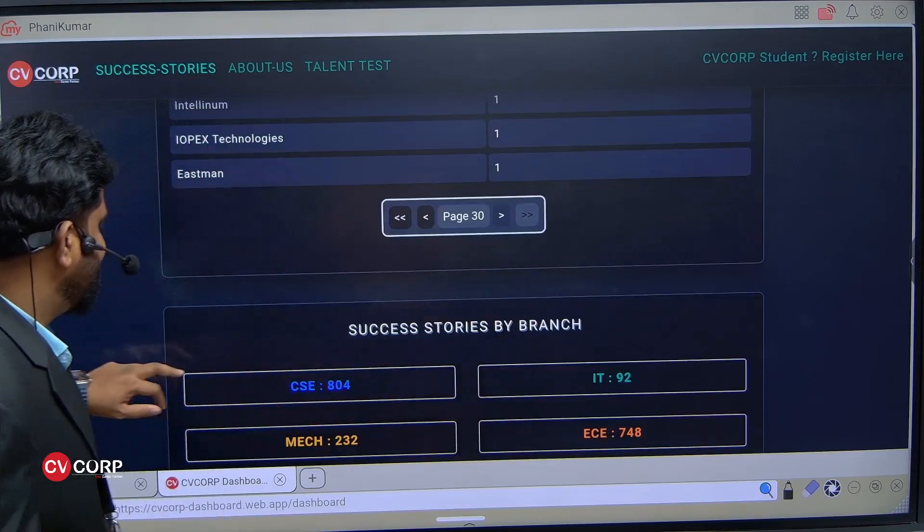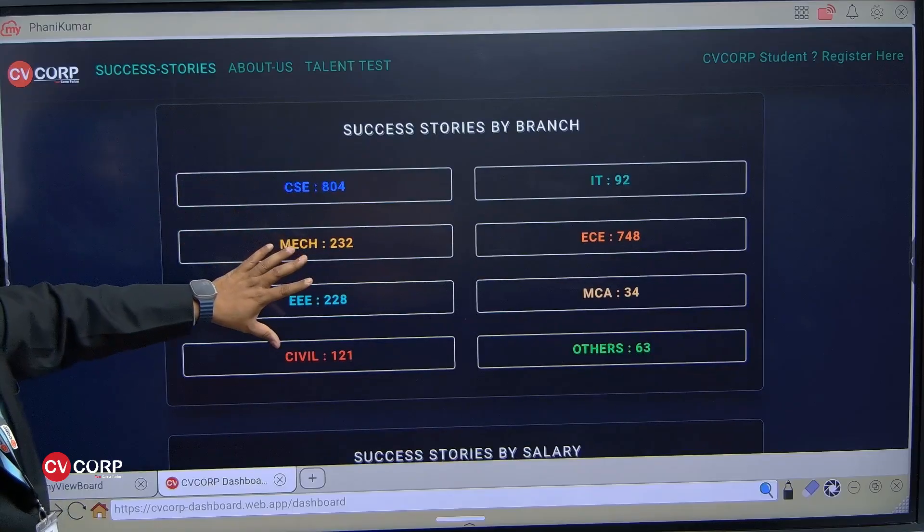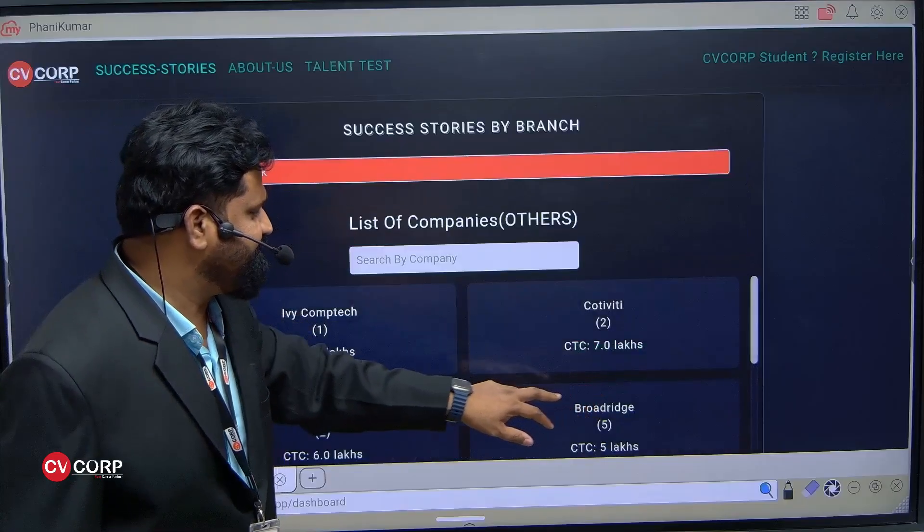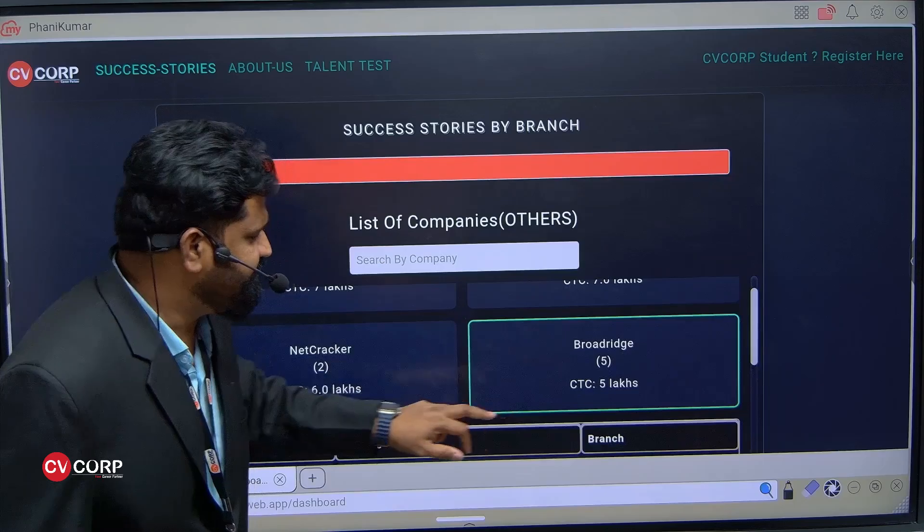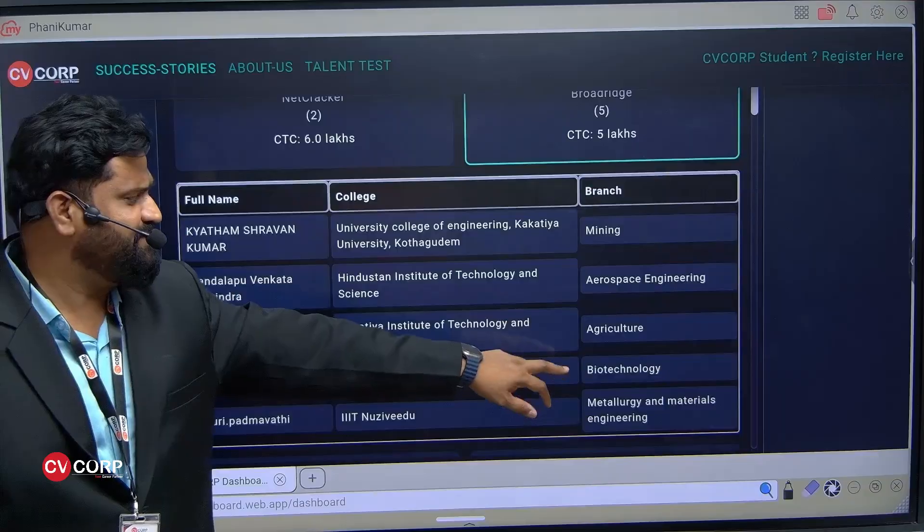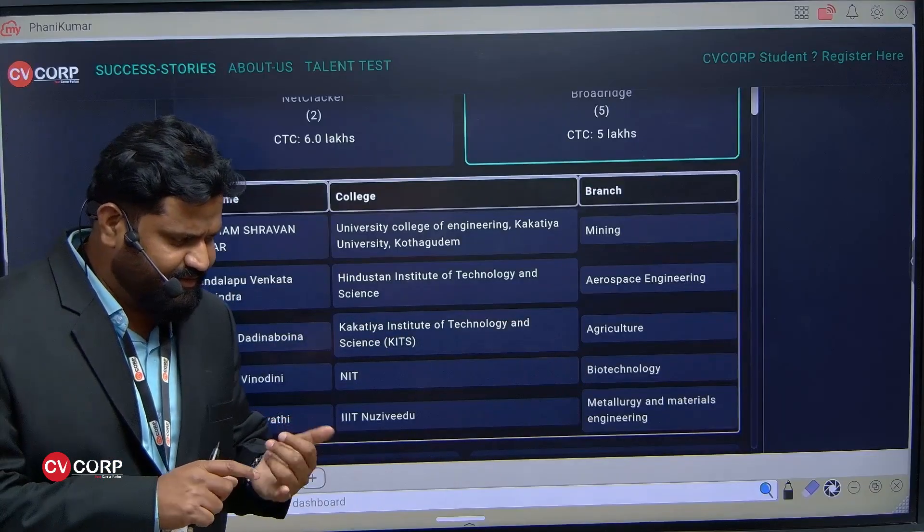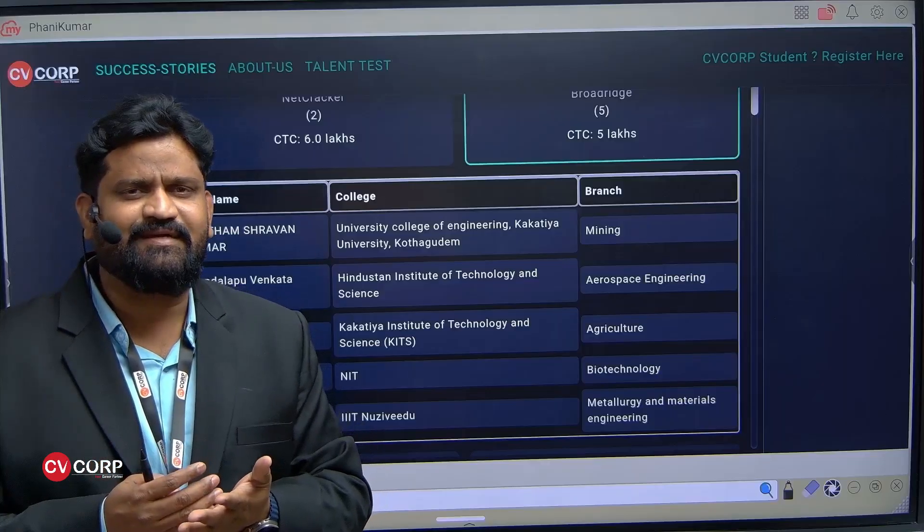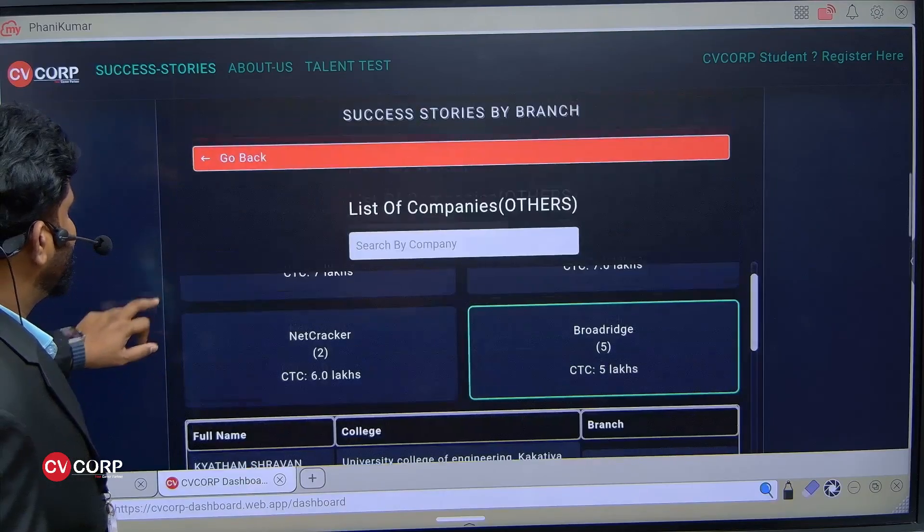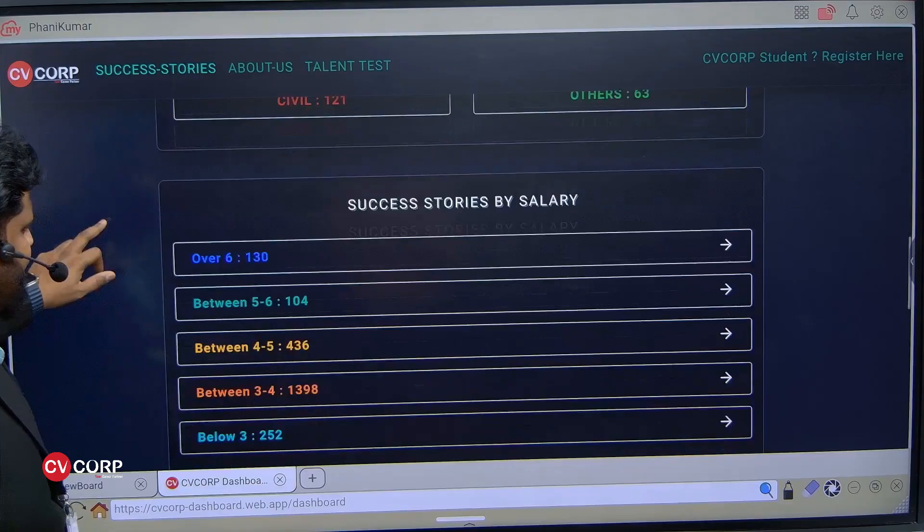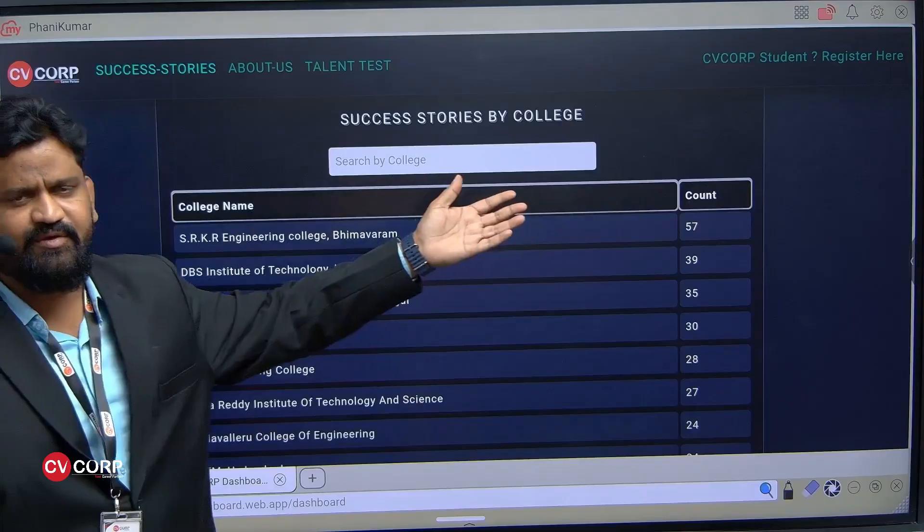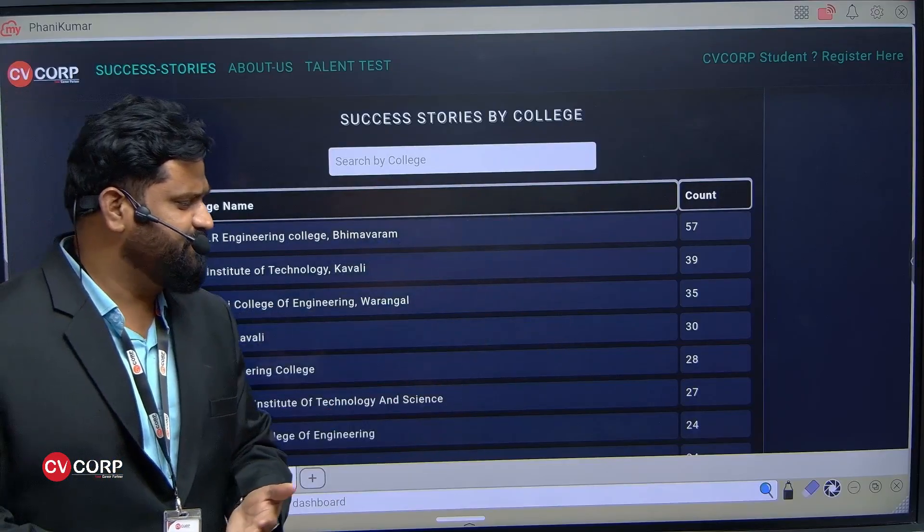It's about different companies where students got placed. We have about 10 companies per page, almost close to 30 pages. You can see all the information branch-wise: CSE, Mech, Triple E, Civil, IT, EC, MCA. Interestingly, we have companies which hired students from CV Corp from branches like mining, aerospace, agriculture, and biotechnology also. Coding is not about your branch - if you are good with mathematics, you can learn coding very easily. Go through the salary-wise data and college-wise. If you type the college name, you can find all the seniors already placed from CV Corp.